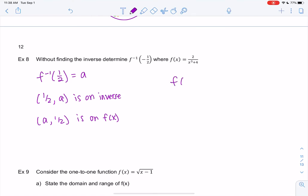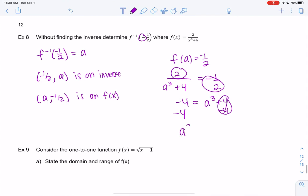What if I plug this into f(x) and solve for a? So f(a) = 1/2. Actually, it was negative one-half. Always good to double-check. So 2/(a³ + 4) = -1/2. Let's solve this. I'm going to cross multiply, so I get -4 = a³ + 4. Then I subtract 4, so a³ = -8.